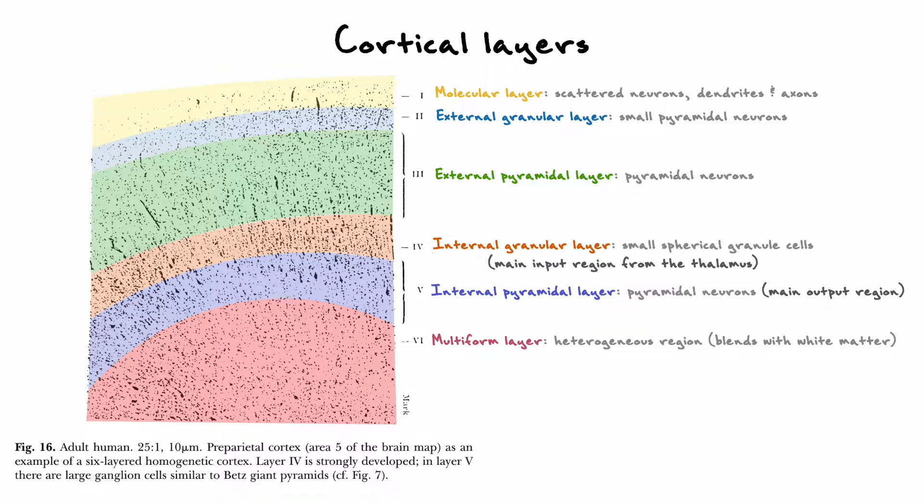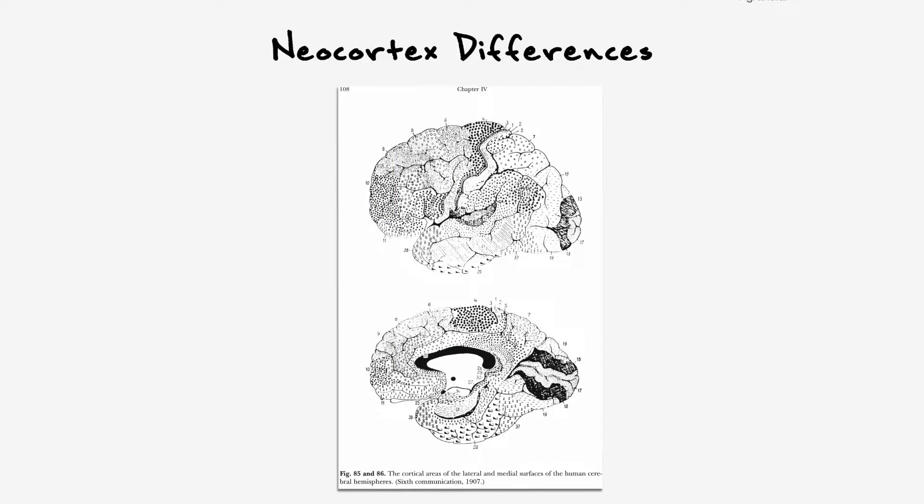Now, although the neocortex has 6 layers everywhere it is represented, the relative size of each layer differs based on the cortical region. This idea is one of the primary considerations Brodmann took to make his map.